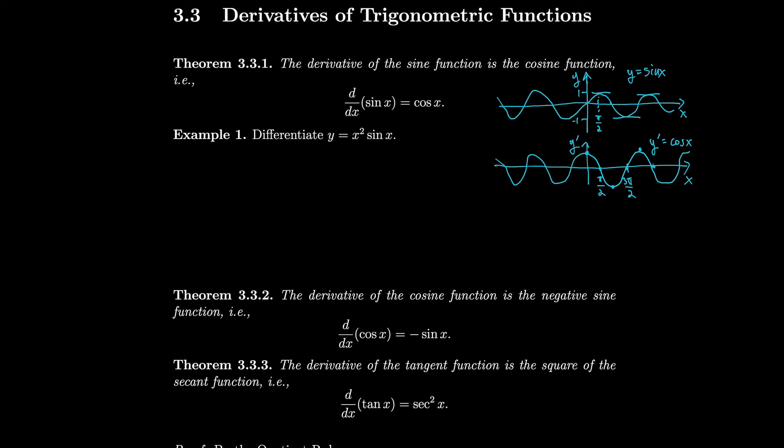The derivative of sine will be cosine. This is something that you can prove, though it's not the easiest thing to prove with our current tools, so we're just going to use the graph as intuition. If you want the proof, you can look it up in the textbook.